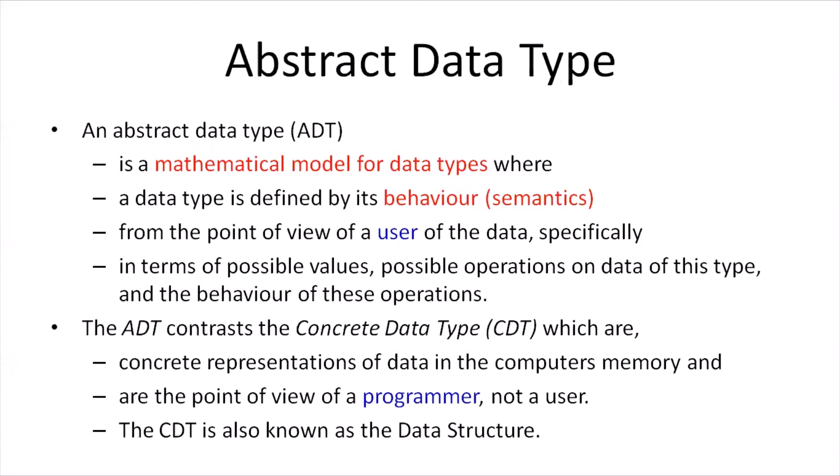All these data types are used to store data in the computer's memory. Whenever we try to store something in memory, the first thing that comes up is the mathematical model for the data type. By the mathematical model, we define the behavior or the semantics of the data type from the perspective of the end user. It specifies the possible values that can be stored and the possible set of operations that can be performed, and the behavior of these operations. However, it does not specify how exactly the data type will be stored in the computer's memory.